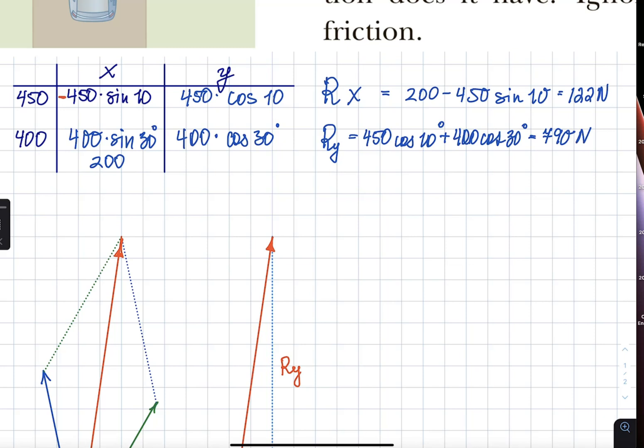Here I'm back with all the calculations completed. 200, which is half of 400, which means that I did 400 times sine of 30, minus 450 sine of 10, gives me 122 newtons. And then, vertically, both vectors are added together because they're both upwards, and that amounts to 790 newtons.